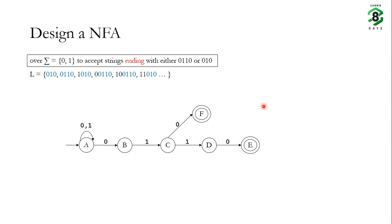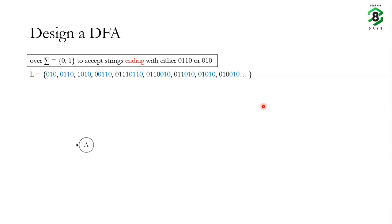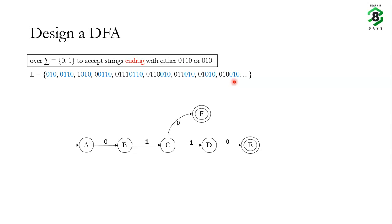Now let's design a DFA to accept the same language — strings ending with 0110 or 010 over input alphabet {0,1}. We start with initial state a. On a if we receive 0 we go to b; on b if we receive 1 we go to c; on c if we receive 1 we go to d; on d if we receive 0 we go to final state e, accepting strings ending with 0110. On state c if we receive 0 we go to another final state f. Up to this point the DFA is partially designed.